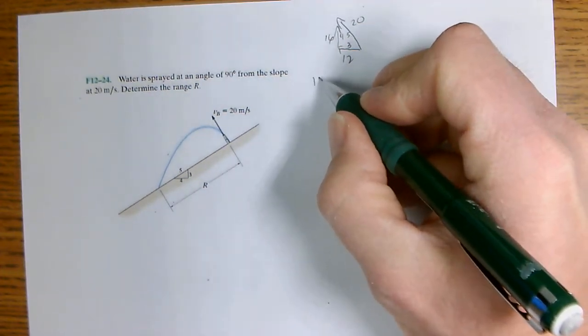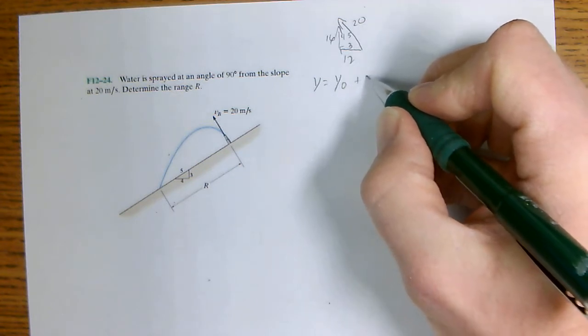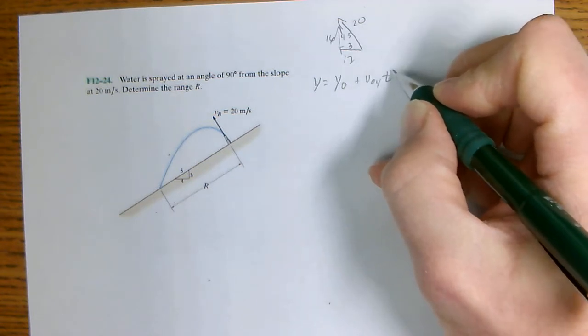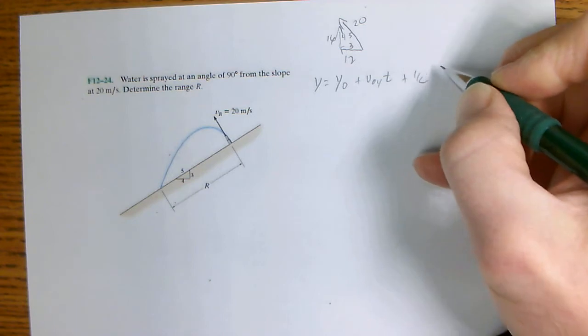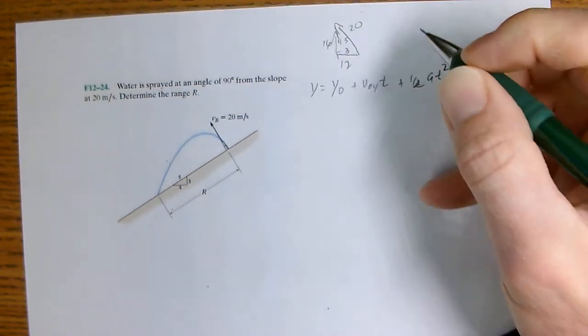Writing out the equation for acceleration we got Y equals Y0 plus V0Y T plus one-half A T squared.